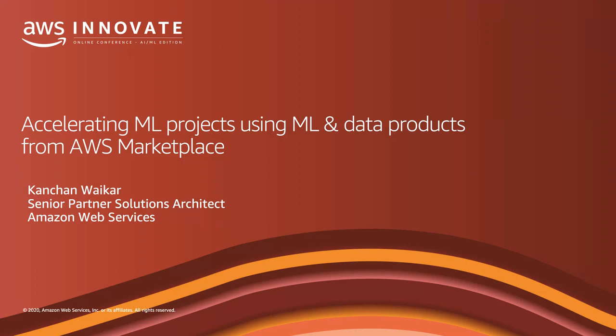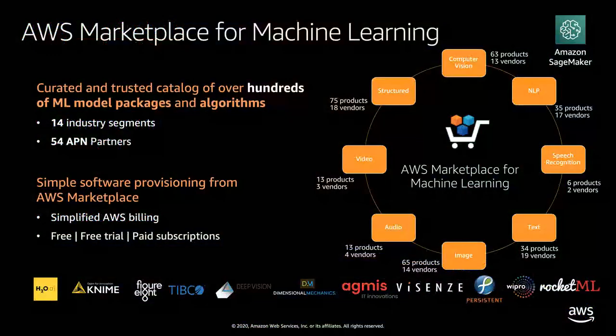Today, I will show you how you can use machine learning products such as ML models, algorithms, and data products from AWS Marketplace to accelerate your machine learning projects. AWS Marketplace is a curated digital software catalog that simplifies the discovery, purchase, and deployment of third-party software. It contains SageMaker-compatible machine learning models and algorithms and over 2,000 third-party data set products.